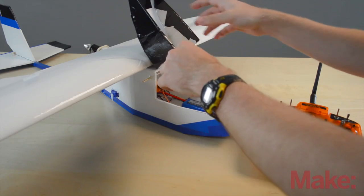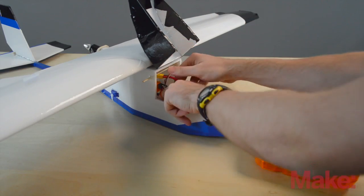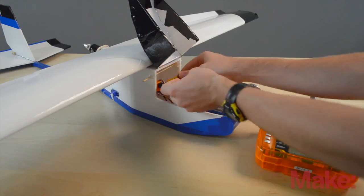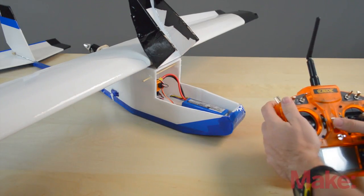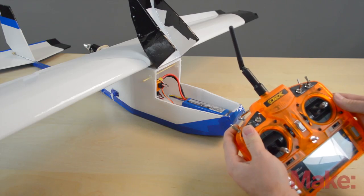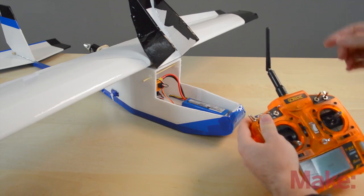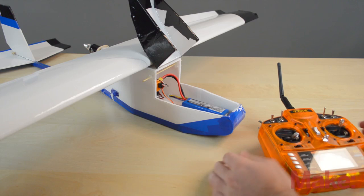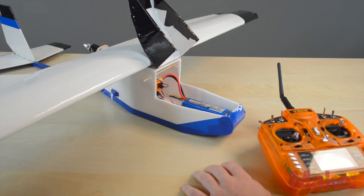I have the bind plug already plugged in, so I'm going to plug in the battery, turn on the radio with the trainer switch held down, power it on, wait for it to bind. The light inside stops, just starts flashing slowly, let go. It's now solid.